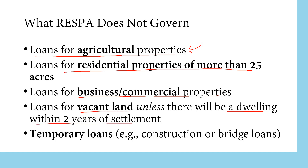If it's vacant land, it does not apply to RESPA unless there will be a dwelling within 2 years of settlement. Temporary loans such as construction or bridge loans also do not apply under RESPA.